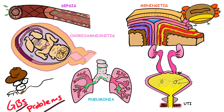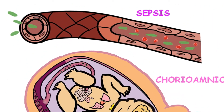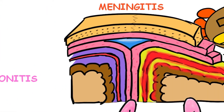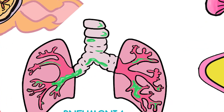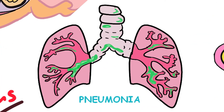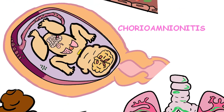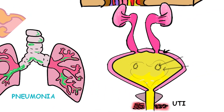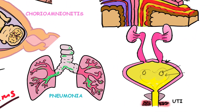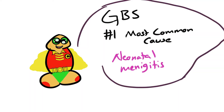With GBS, we need to worry about neonatal sepsis, neonatal meningitis, neonatal pneumonia, neonatal osteomyelitis, chorioamnionitis, and UTIs in pregnant women. Streptococcus agalactiae is the number one cause of neonatal meningitis.